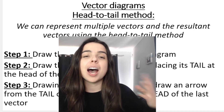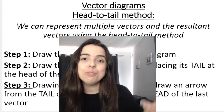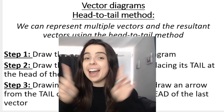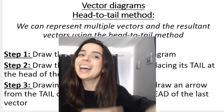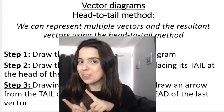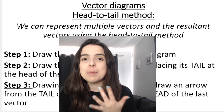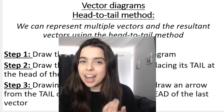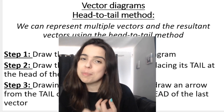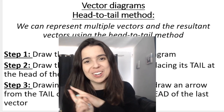The head-to-tail method is how we represent multiple vectors and the resultant vector. In this video, we'll be looking at the steps on how to draw a head-to-tail diagram, and we're going to be practicing a few examples. Let's go.